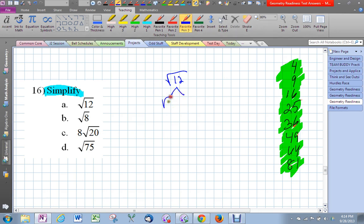So what do we know? The square root of 4 is 2, so my answer is 2 radical 3. Let's do the next one, radical 8.